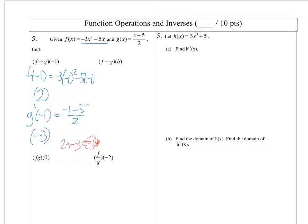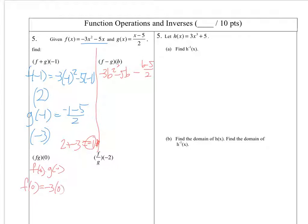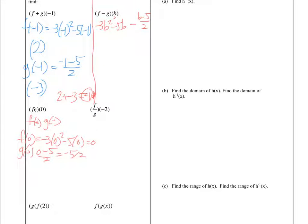f minus g of b — this one I can't really do separately, so I'm going to rewrite those using b as our variable. So negative 3b squared minus 5b minus b minus 5 over 2. Not a lot of stuff we could do there, so I'm just going to leave that as is. For f times g of 0 — this really means f of 0 multiplied by g of 0. I'm going to find those separately. f of 0 gives negative 3 times 0 squared minus 5 times 0, which is 0. And g of 0 gives 0 minus 5 over 2, or negative 5 over 2. If I do 0 times anything, even negative 5 over 2, I get 0 as my answer.